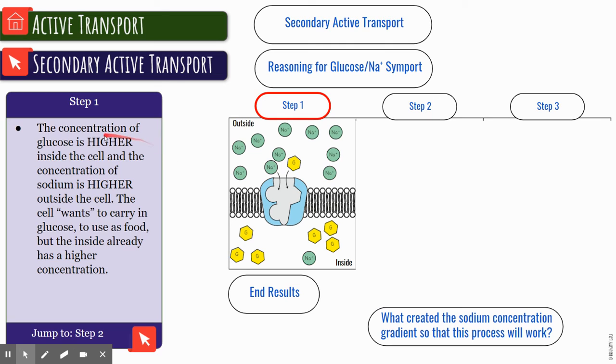Step one: the concentration of glucose is higher inside the cell and the concentration of sodium is higher outside of the cell. We want to get more glucose in, so we're going to use the power of the sodium concentration gradient to power glucose in at the same time.